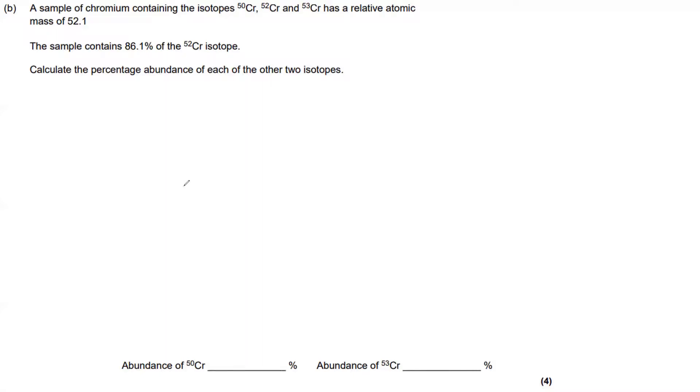We're going to go through a difficult relative atomic mass question. Let's get into it. A sample of chromium containing the isotopes chromium-50, chromium-52, and chromium-53 has a relative atomic mass of 52.1.